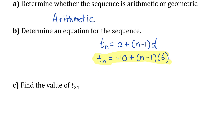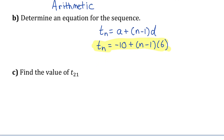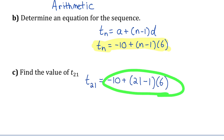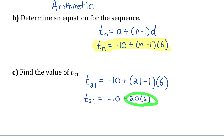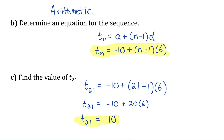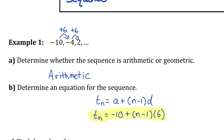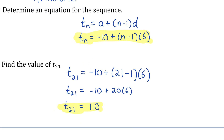For part c, we use that formula to find the value of term 21. Replacing n with 21: 21 minus 1 is 20, and 20 times 6 is 120, so negative 10 plus 120 is 110. This means if we listed out the first 21 terms by continuing to add 6 each time, the 21st term would be 110.